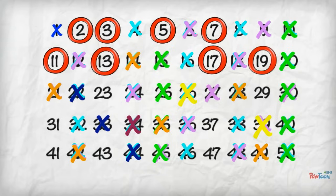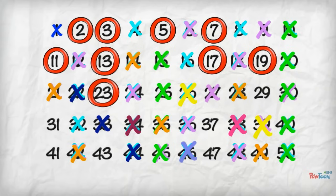19 is next. Cross out 38 because that's its multiple. 23, you know what to do. 46 is gone.